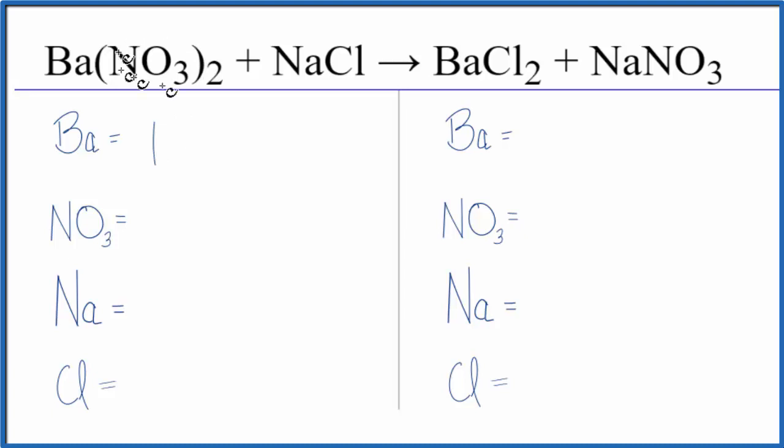We have one barium atom and then this NO3, we call this the nitrate ion, very common in chemistry. It stays together in the reaction and we have it here and here, so we're just gonna call this one thing.